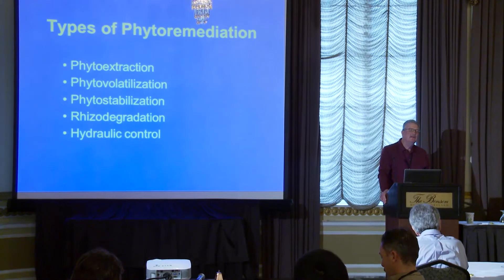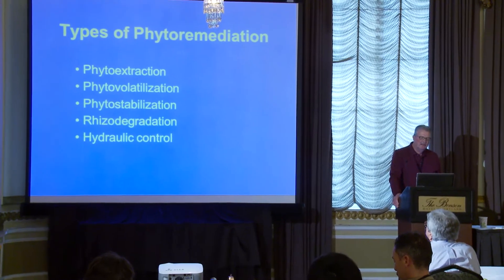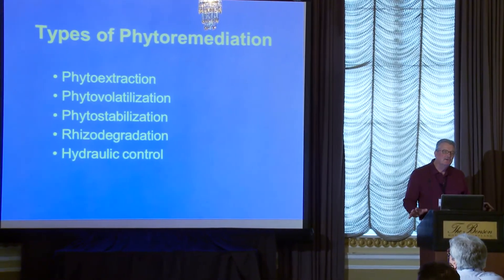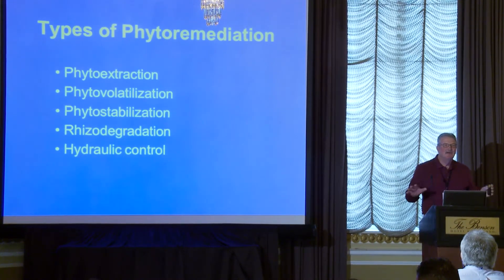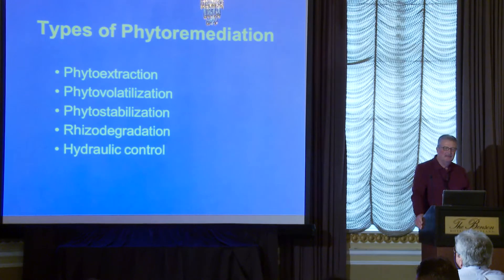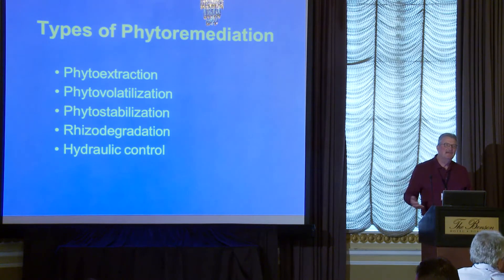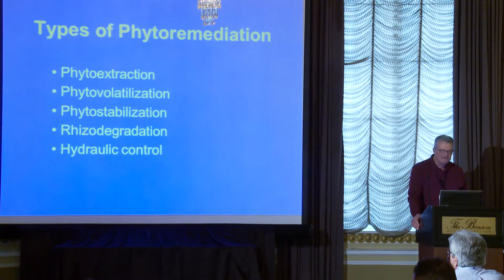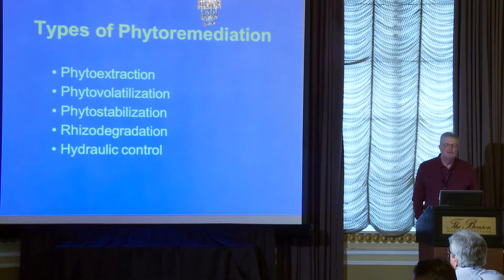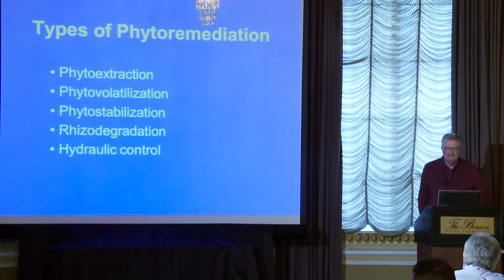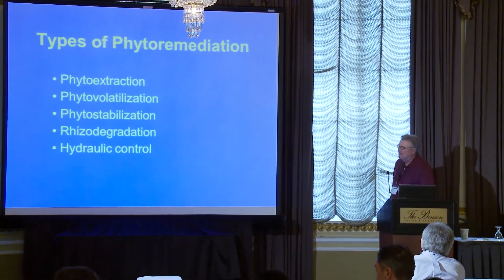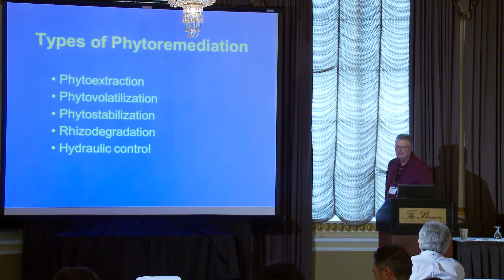Plants can also degrade the contaminant in the soil in the root zone, where the microbes have their homes. Trees and plants provide the home for the microbes that do so much of the degrading — so it's not just the plant, it's the overall rhizosphere. And really the key is how much water the plants are taking up, because that's the way we move contaminants out of the soil and water into a safer situation.